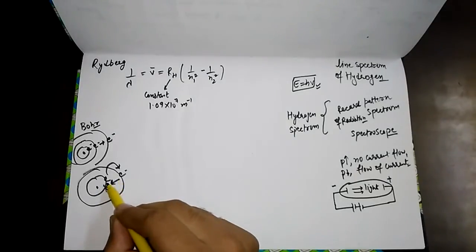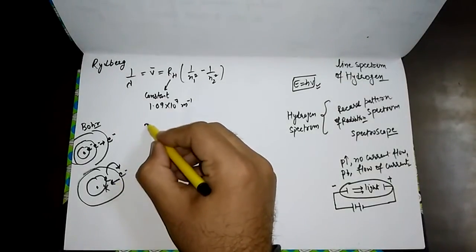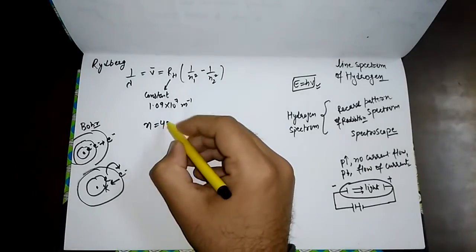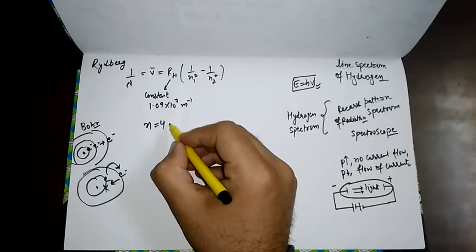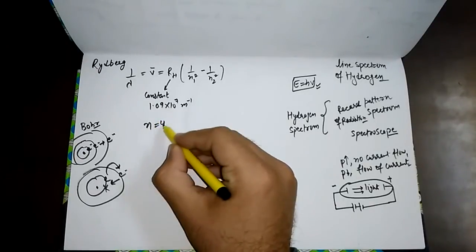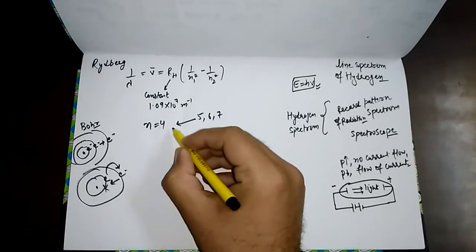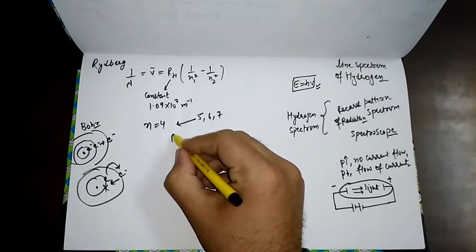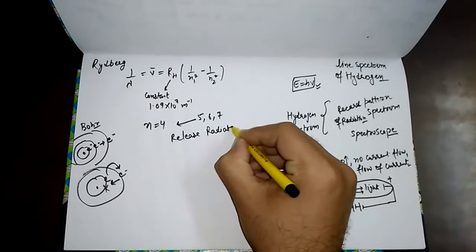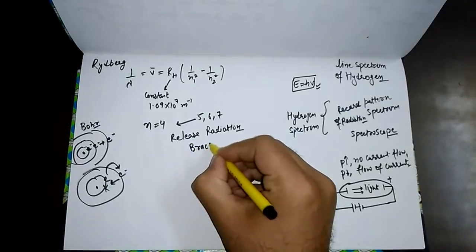It may be noticed in the returning journey that the electrons may follow the same route. If an electron jumps from a higher shell — say from shell 5, 6, or 7 — down to the 4th shell, it will release a radiation of particular wavelength and frequency. We call that radiation the Brackett series.